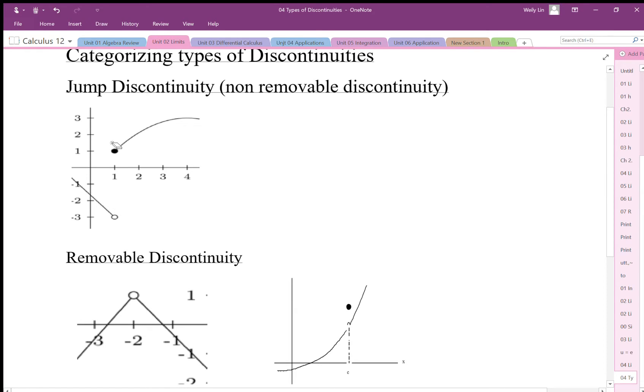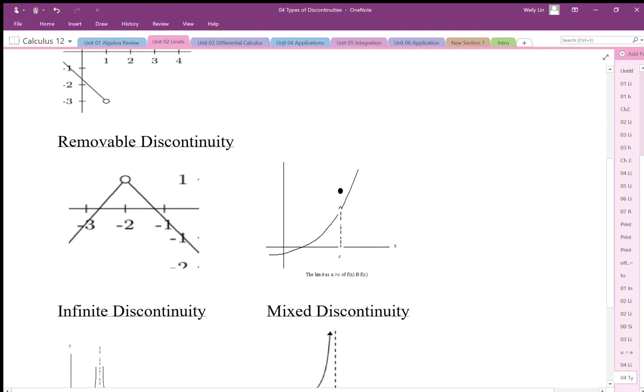Then this is called a jump discontinuity. A removable discontinuity is when basically we have a hole. The limit is the same going from both sides, but we have a hole there. So that's the removable discontinuity.